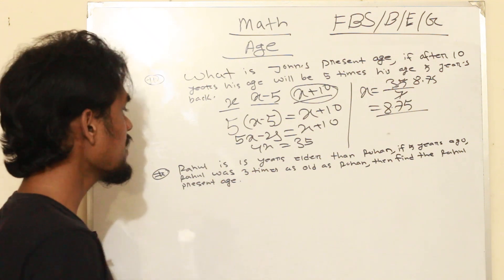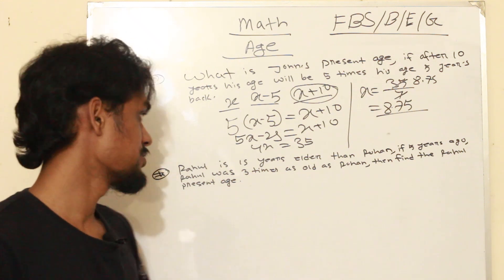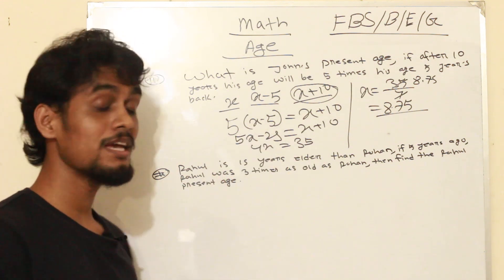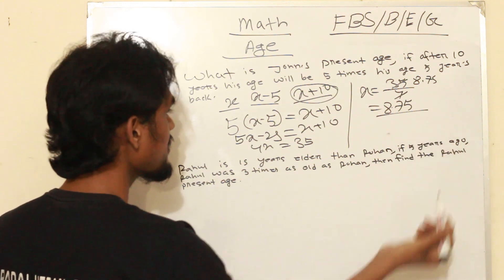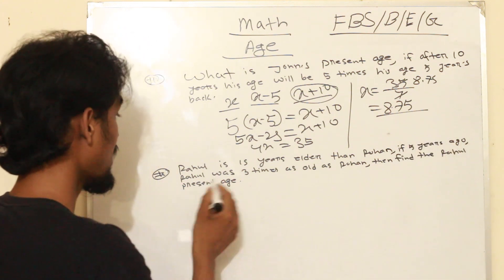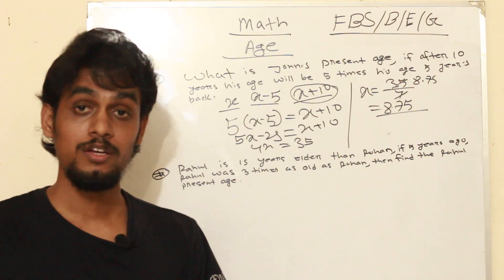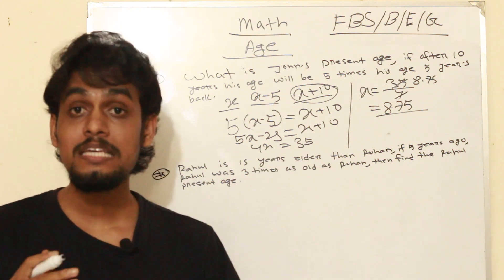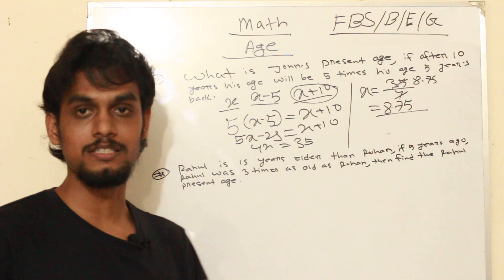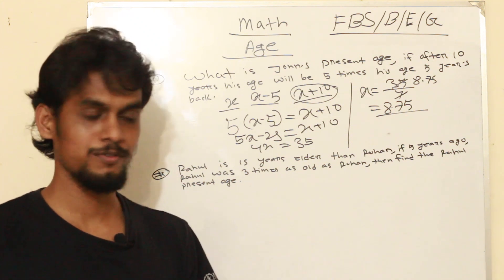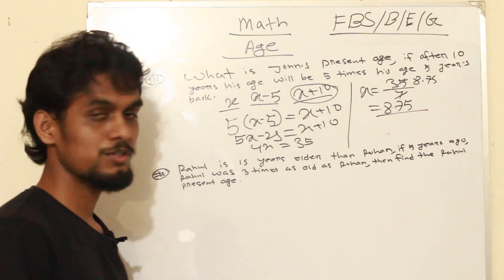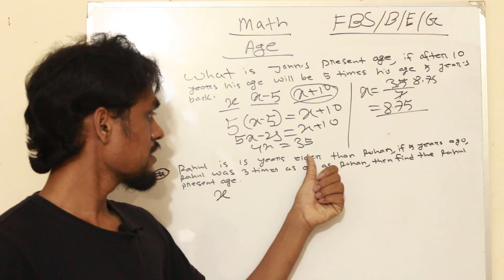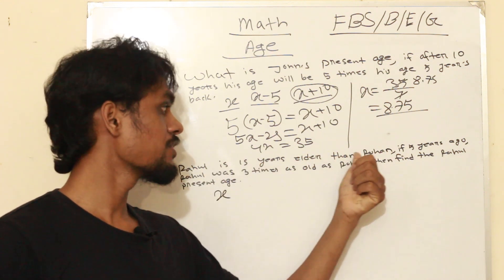Second problem: One year ago, five years ago Rahul was three times as old as Rohan. Then find Rahul's present age. So we need to find Rahul's present age. Let Rahul's present age be x.